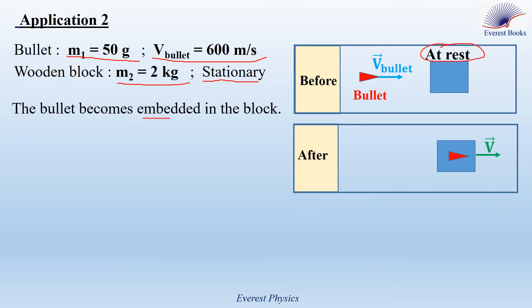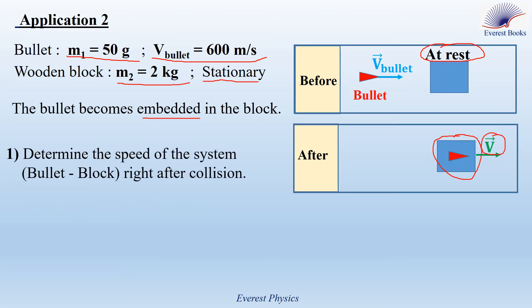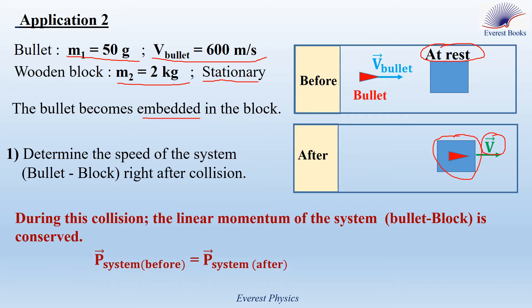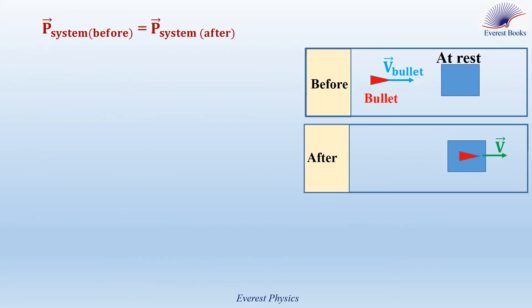Embedded means the block and the bullet move as one body after collision with the same velocity V. Determine the speed of the system — bullet-block — right after collision. We know that during collision, the linear momentum of the system, bullet-block, is conserved. So P system just before collision is equal to that right after collision.